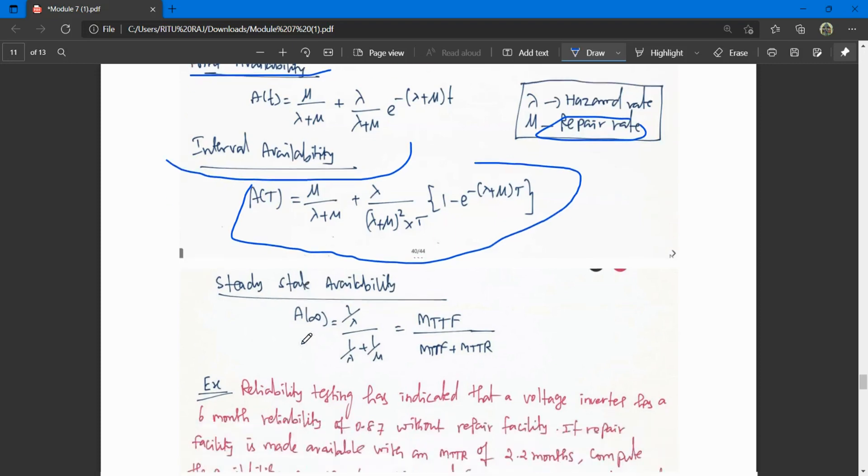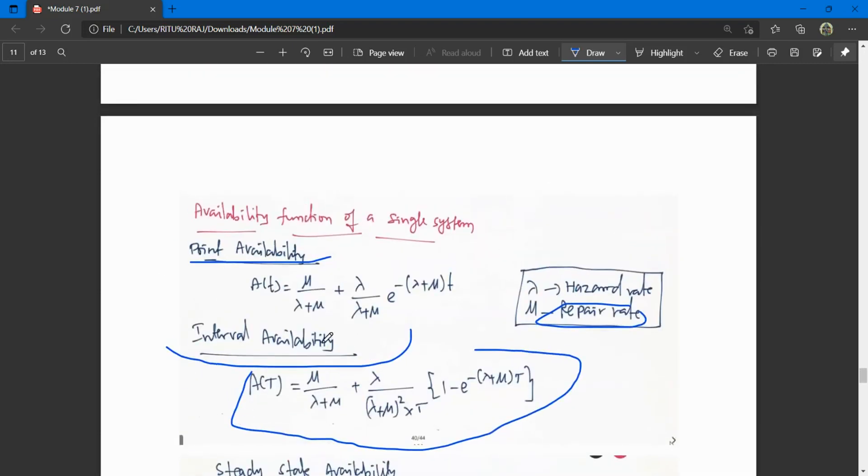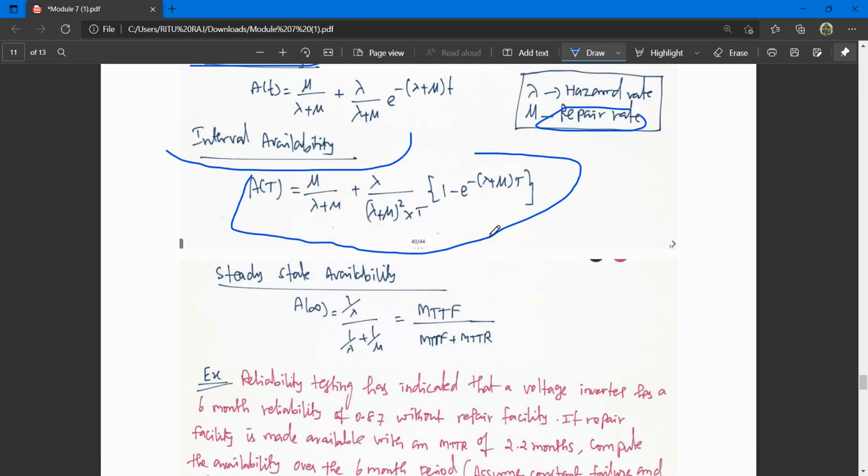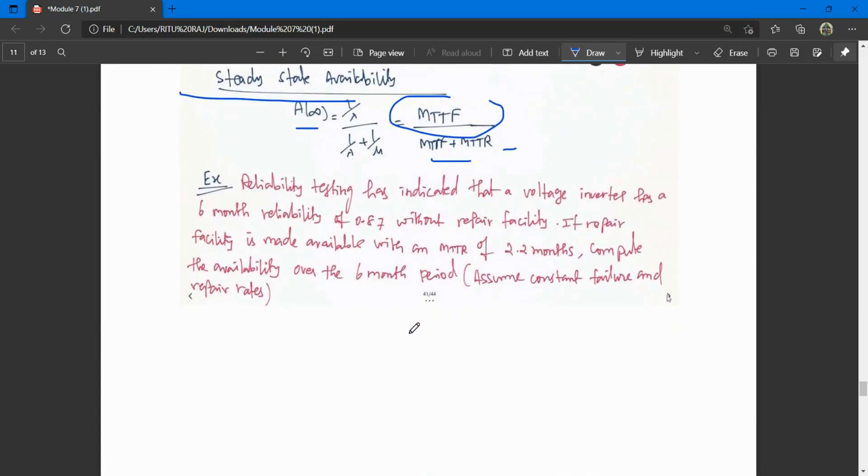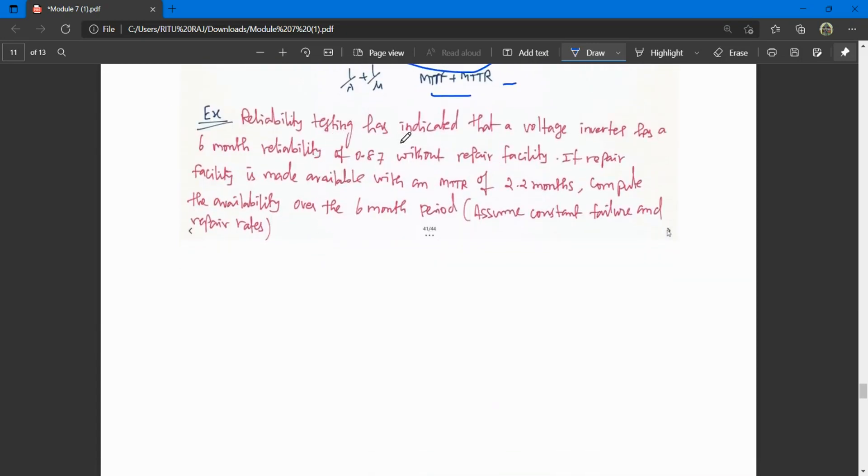Steady state availability is A(infinity) equals 1/lambda divided by (1/lambda + 1/nu), which is MTTF divided by (MTTF + MTTR).